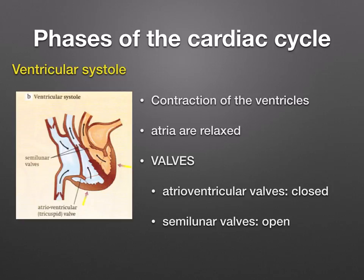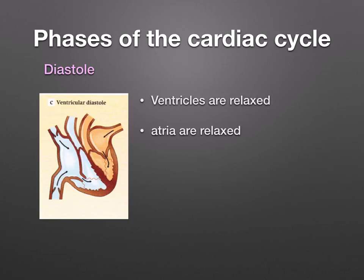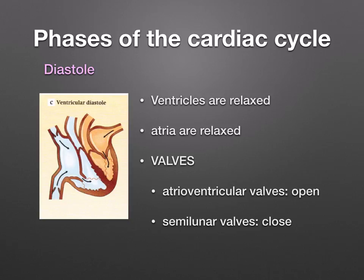The muscles in the ventricular walls are thick as they have to pump blood further than the atria. Interestingly, any additional resistance to blood flow, such as narrowing of the aorta, will lead to increased thickening of the left ventricle. In the final phase, diastole, the cardiac muscles of the ventricles and atria are relaxed. As the atria fill, pressure rises, pushing open the atrioventricular valves and allowing blood to pass into the ventricles. Since the pressure in the ventricles is lower than in the arteries, the semilunar valves in the aorta and pulmonary artery shut — this is that 'dub' sound when you hear your heartbeat.